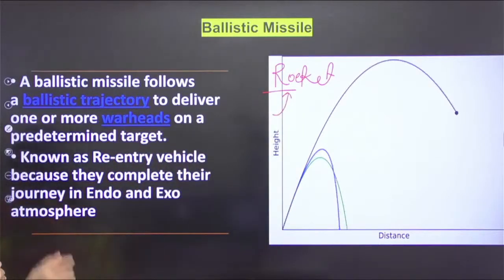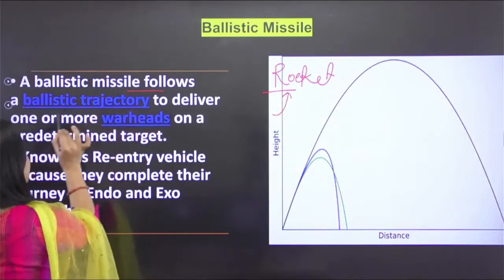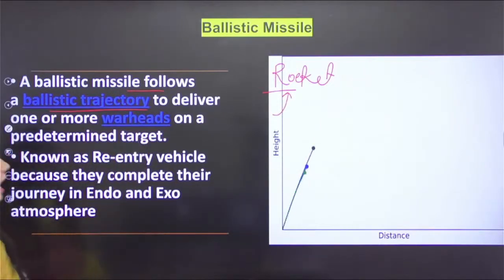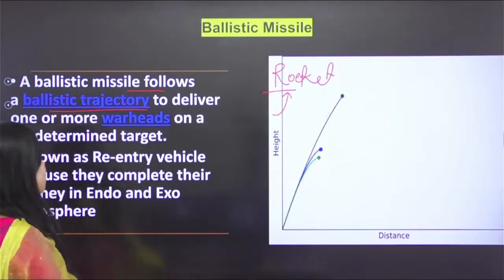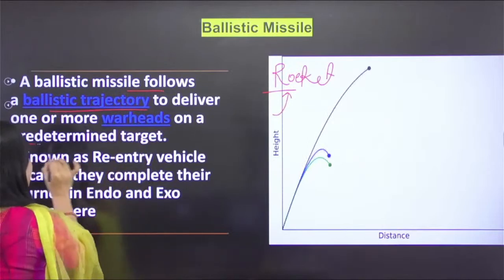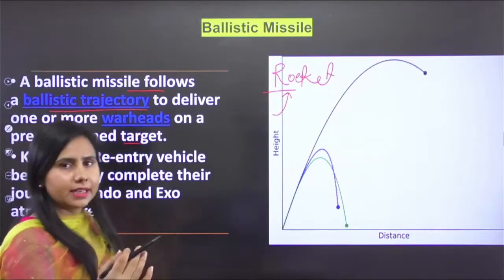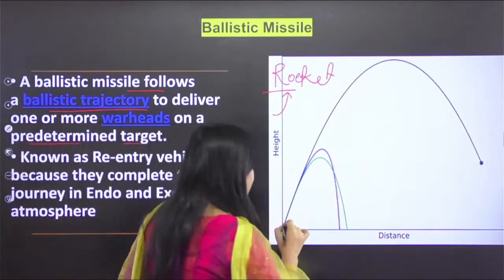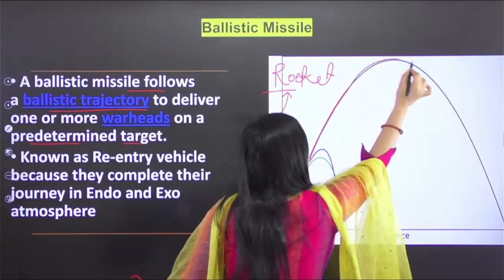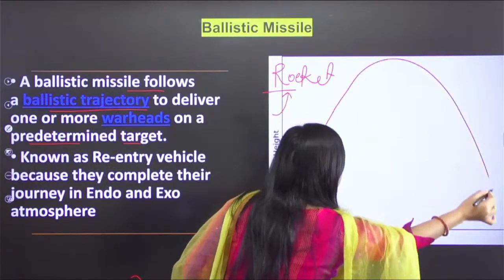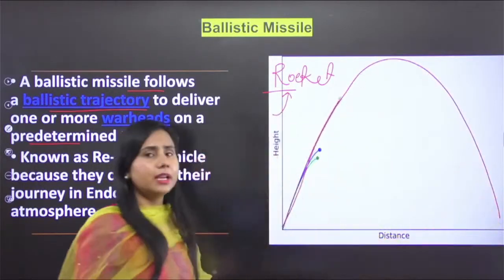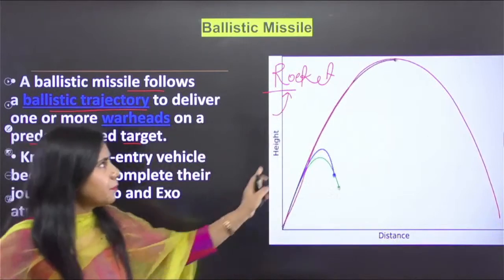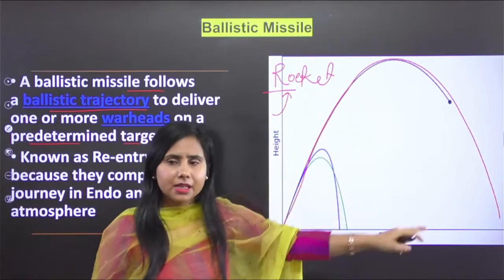A ballistic missile follows a ballistic trajectory to send its warheads to predetermined targets. Let's understand easily: a ballistic missile follows a parabola-like path. You can see the parabola path — the maximum height is attained at the top of the arc.